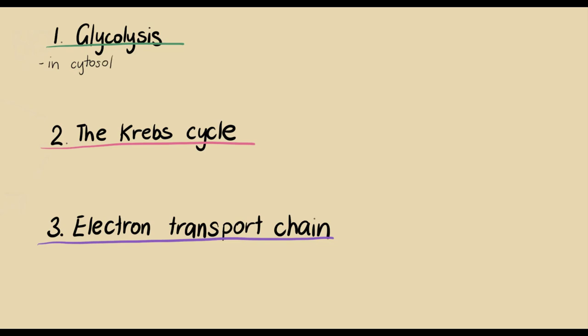Glycolysis in the cytosol, the Krebs cycle occurs in the mitochondrial matrix, and the electron transport chain occurs across the inner mitochondrial membrane.